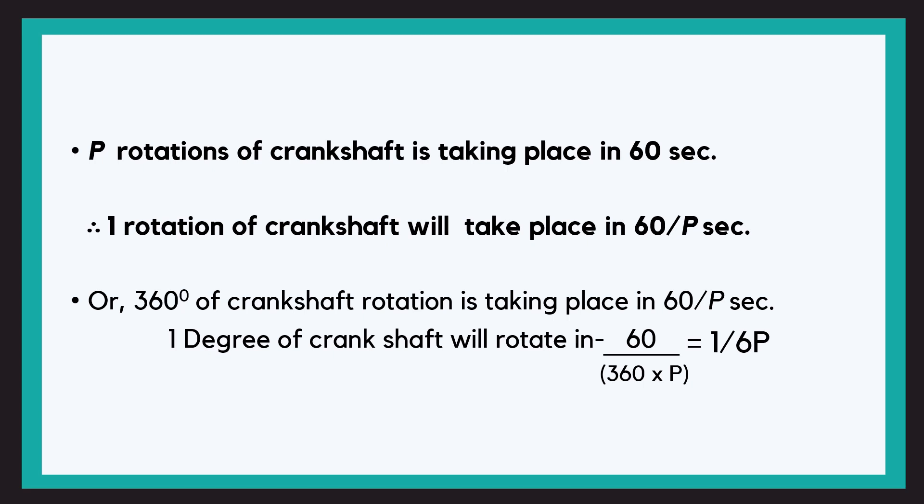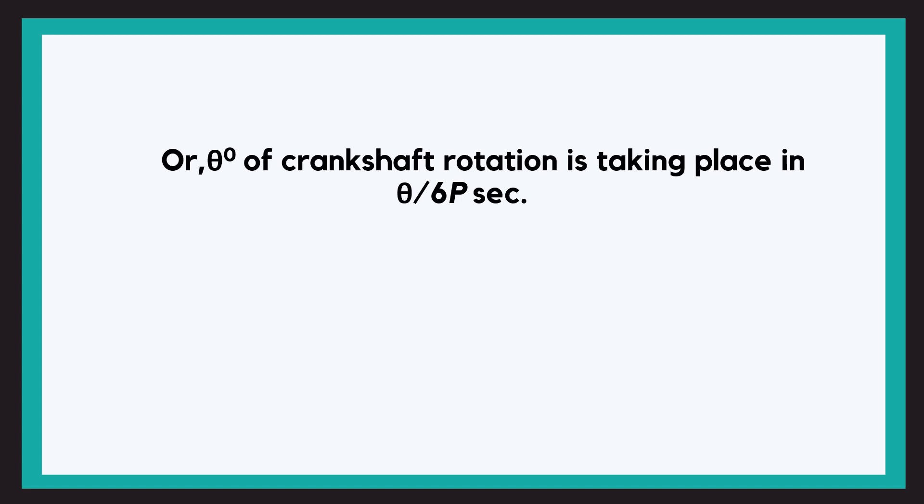So now one degree rotation is 1 upon 6P seconds. How much time would theta degree require? That will be theta multiplied by 1 upon 6P, correct? So in terms of crankshaft rotation, the time required will be theta upon 6P seconds. So this will be our equation number 2.